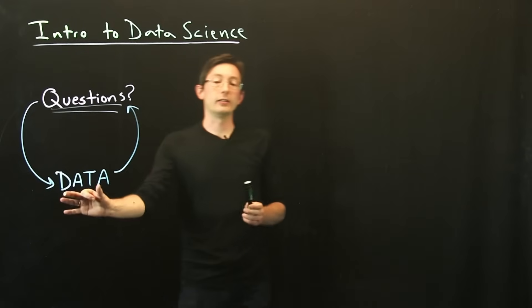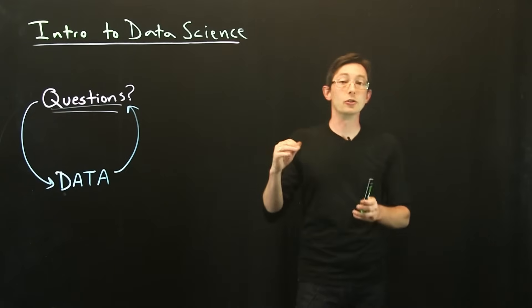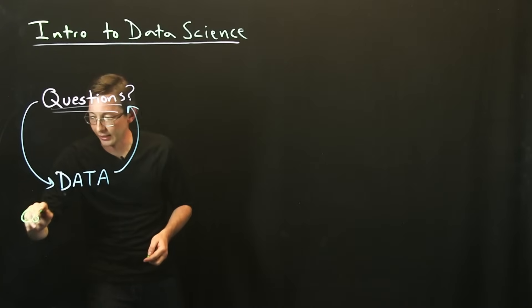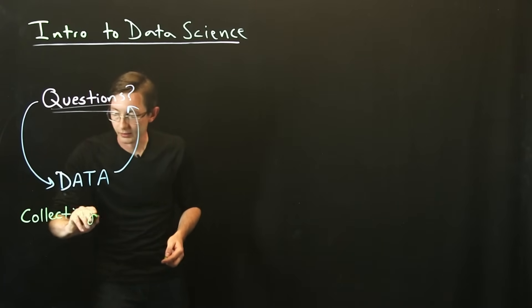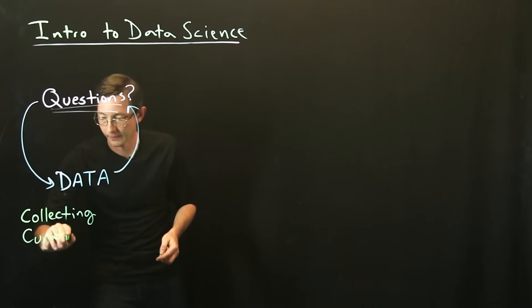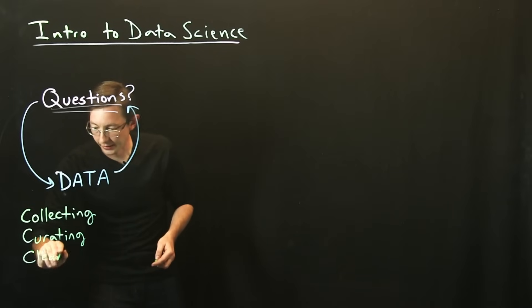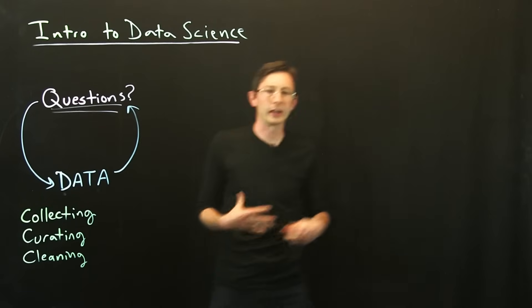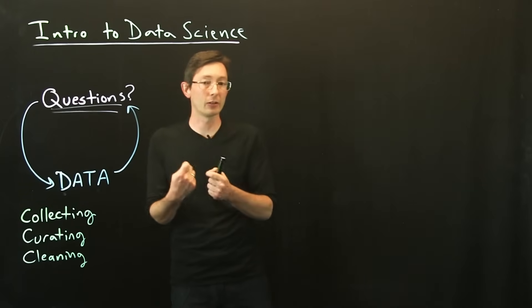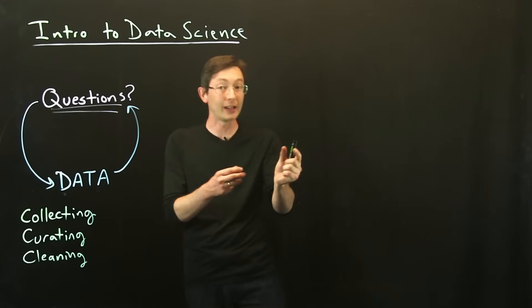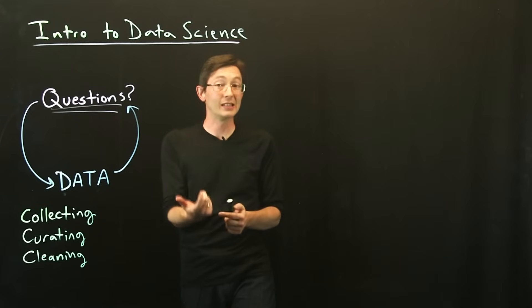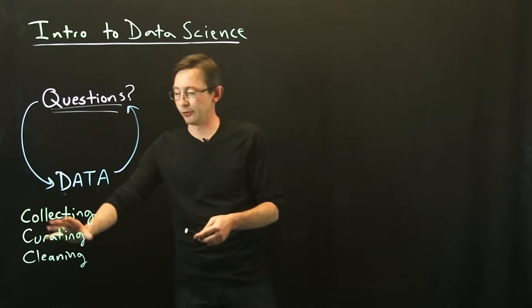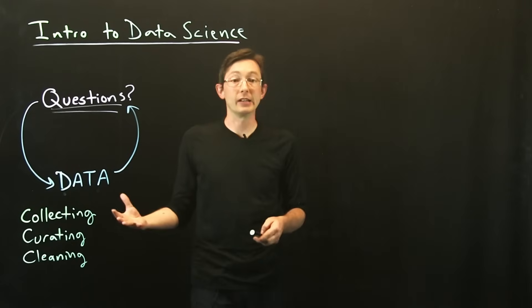A lot of data science goes into collecting the data, storing the data, cleaning the data, processing the data. So collecting, curating, storing, cleaning the data are huge aspects of data science. A lot of database engineering and management, data processing algorithms, cleaning data, identifying outliers and filling them in. What if you have missing data? Real world data is messy. And so the collecting, curating and cleaning of data is absolutely critical.